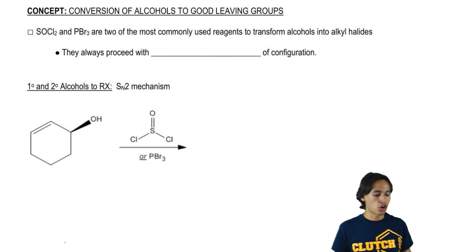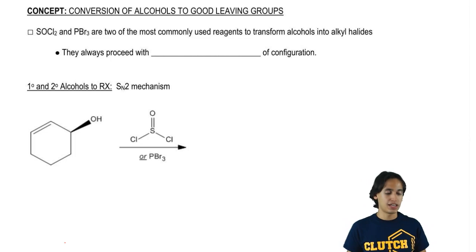So basically, these reagents are SOCl2 and PBr3. And respectively, they're going to turn alcohols into alkyl chlorides or alkyl bromides.